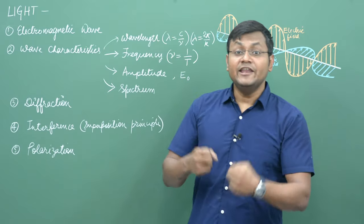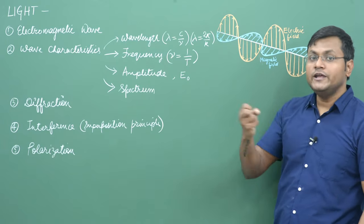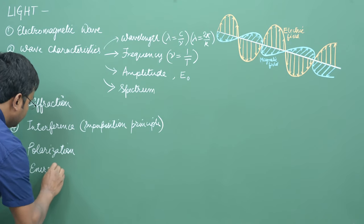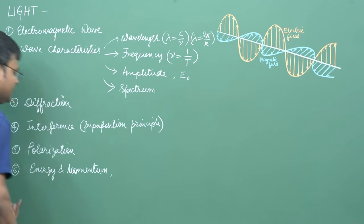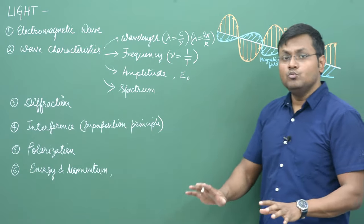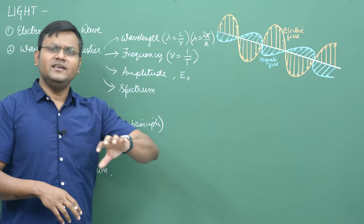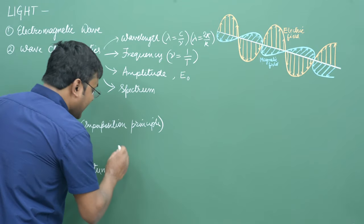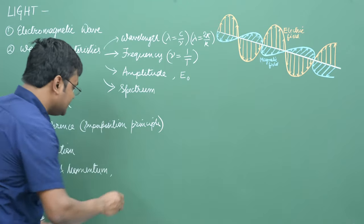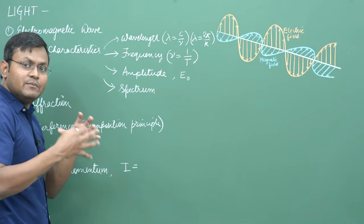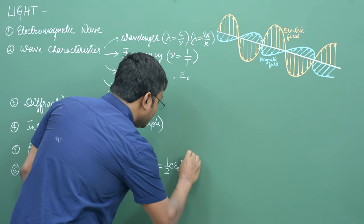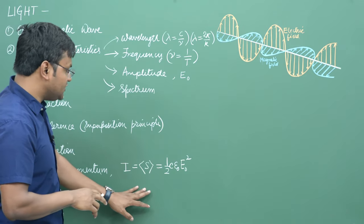Waves also carry energy and momentum. So whenever light is moving from one point to another, it can carry with it energy and momentum. Classical electromagnetic theory can predict that the total amount of energy per unit time per unit area carried by an electromagnetic wave from point A to point B is given by what is known as intensity. And the intensity is essentially equal to the time average of the Poynting vector, which is in fact equal to half c epsilon naught E naught squared.